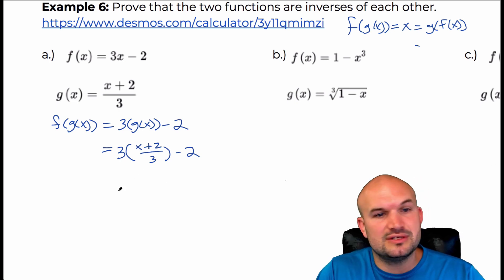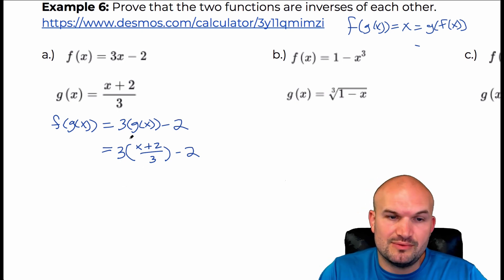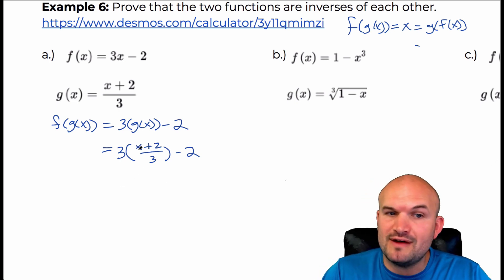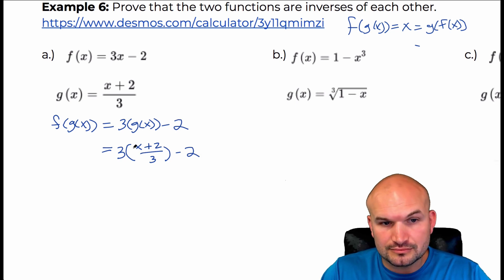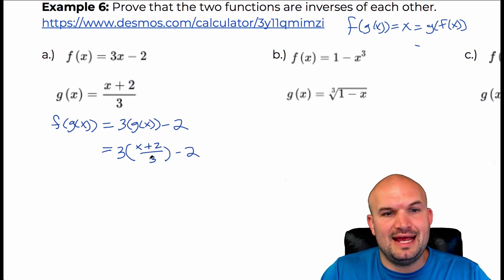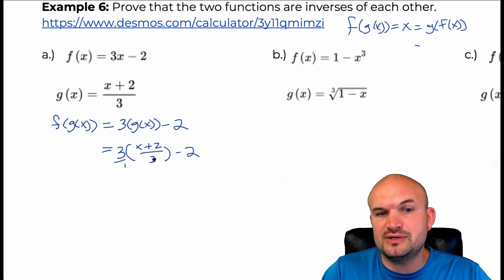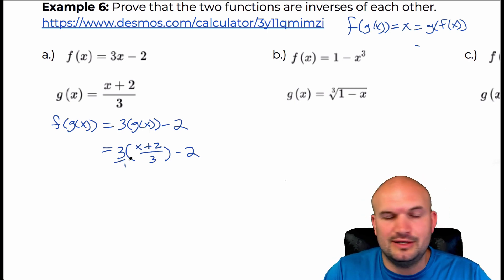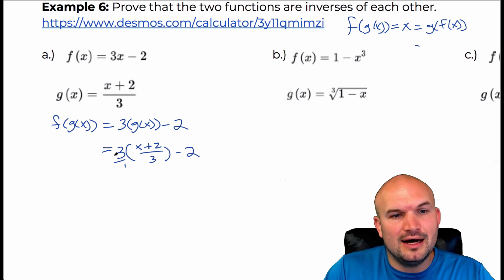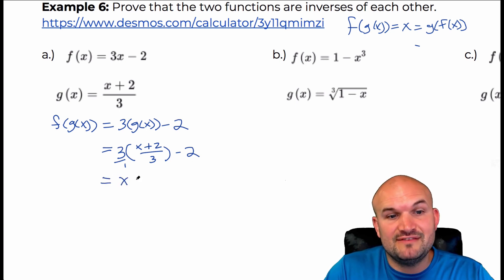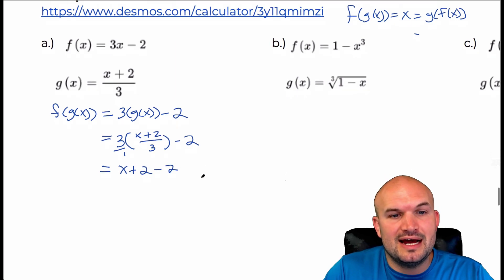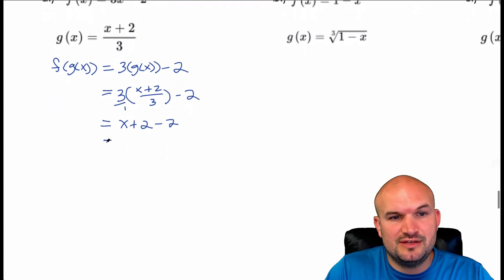Now we just need to simplify using the order of operations. You can see that there's a three in the numerator times a three in the denominator — those threes are going to divide to one. So that just leaves me with x plus two minus two, and x plus two minus two is just going to leave me with x.